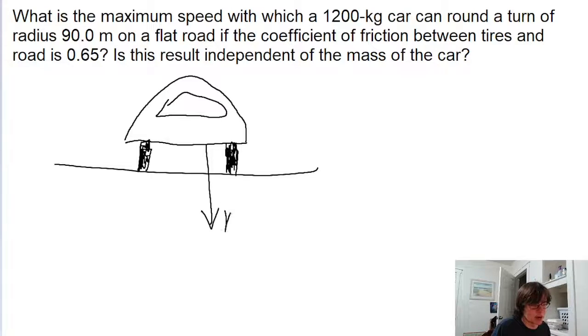There is the weight acting downwards, which is equal to the mass times the gravitational acceleration. And the normal force acts upwards, force normal. And then there's a force of friction acting on to one side of the car as it's turning the curve.